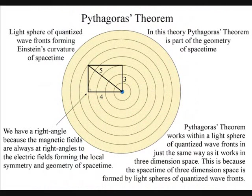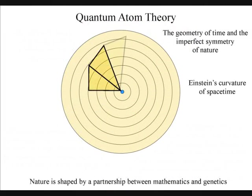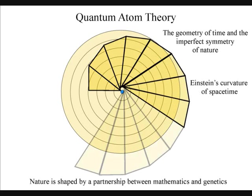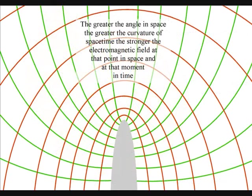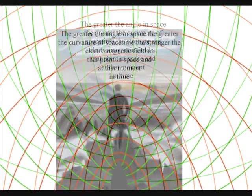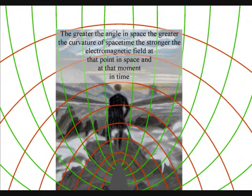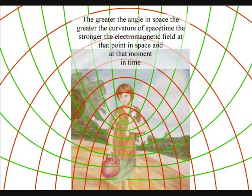The magnetic fields are always at right angles, to the electric fields, forming a local space-time symmetry and geometry, that will spiral out, creating the visual and mathematical patterns of our universe. The greater the angle in space, the greater the curvature of space-time, the stronger the electromagnetic field, at that point in space, and at that moment in time.